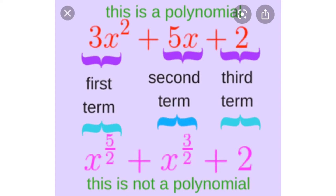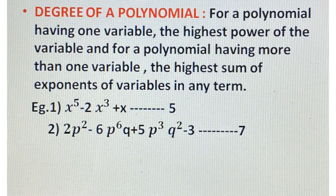Next is the degree of a polynomial. For a polynomial having one variable, the highest power of the variable is called the degree of the polynomial. For a polynomial having more than one variable, the highest sum of exponents or powers of the variables in any term is called the degree of the polynomial.